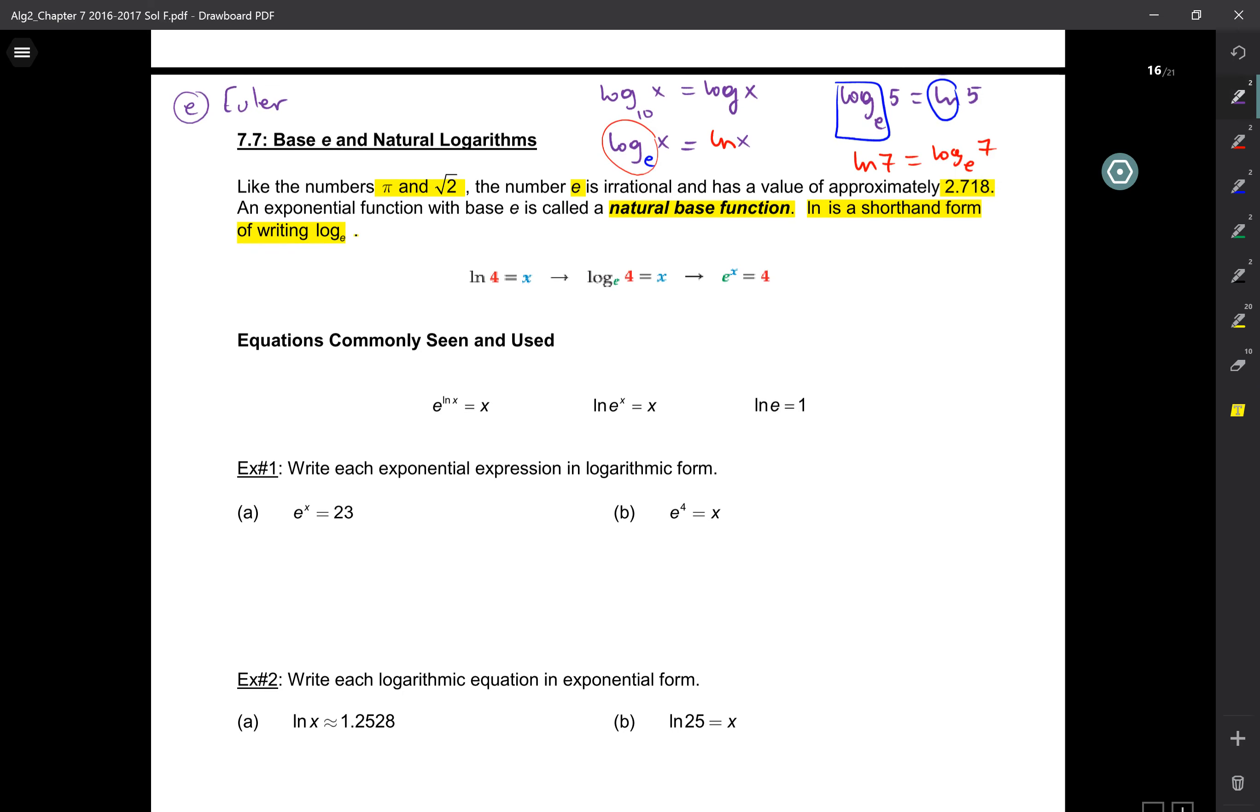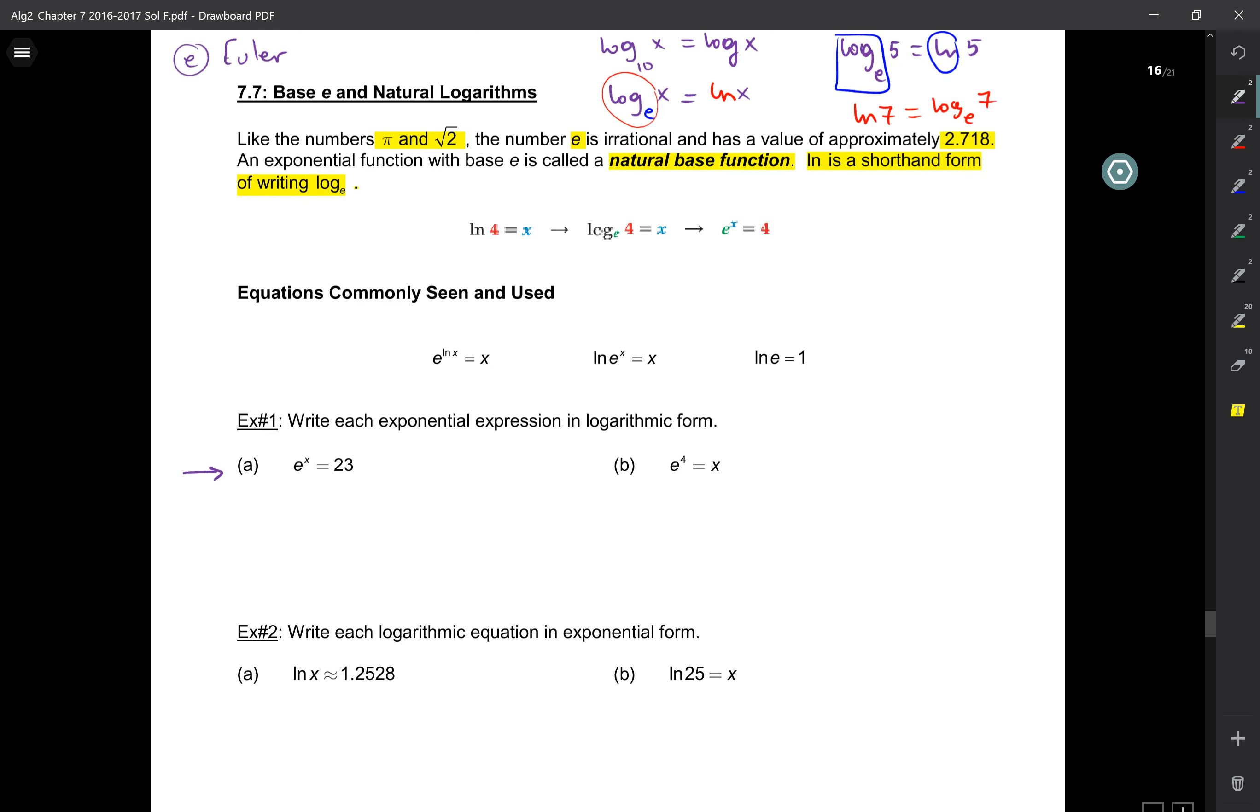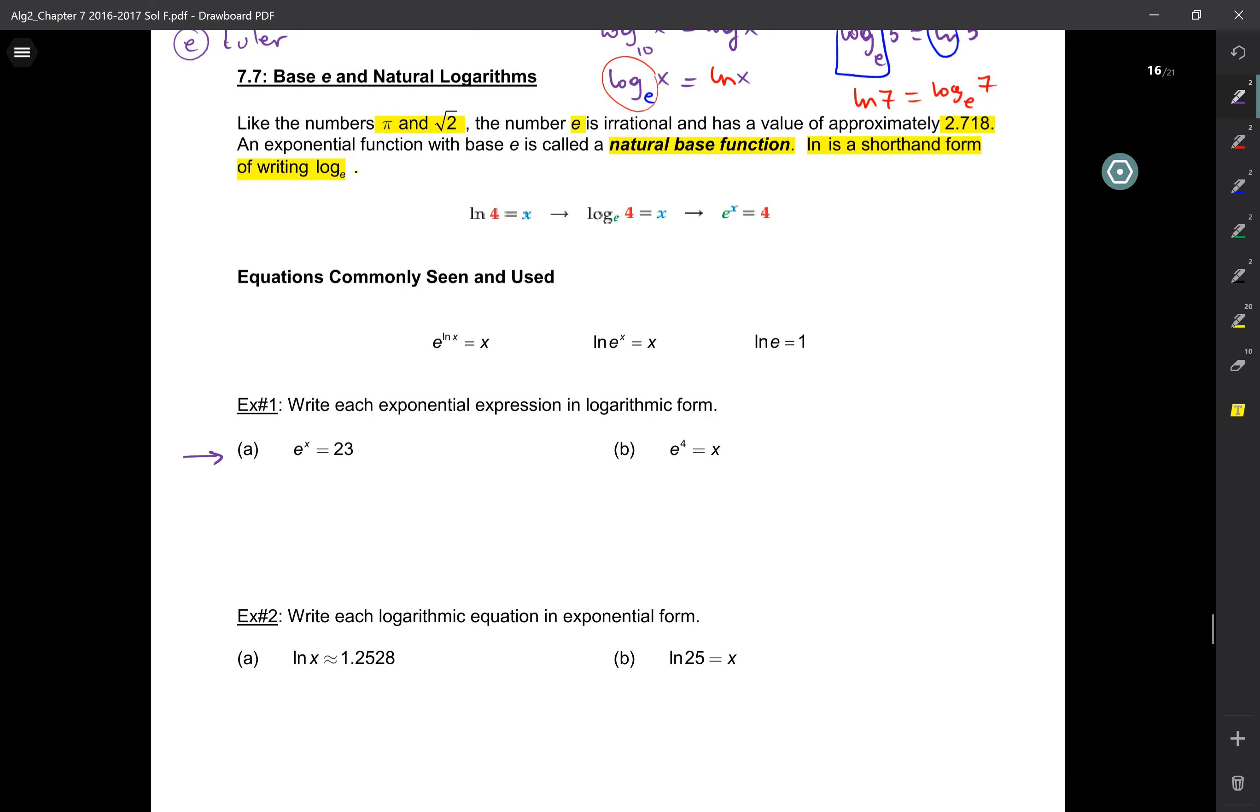Let's skip to this example one. It says to write each expression in logarithmic form. So if I'm going to write it in logarithmic form, how would I have done it before? That would just have been log base what? What's the base here? The base is E of 23 is equal to x. But I don't do log E. That's not really accepted. What do I do instead? ln of 23 is equal to x. So I wouldn't even use that intermediate step. How would I write this one? ln of x is equal to 4.